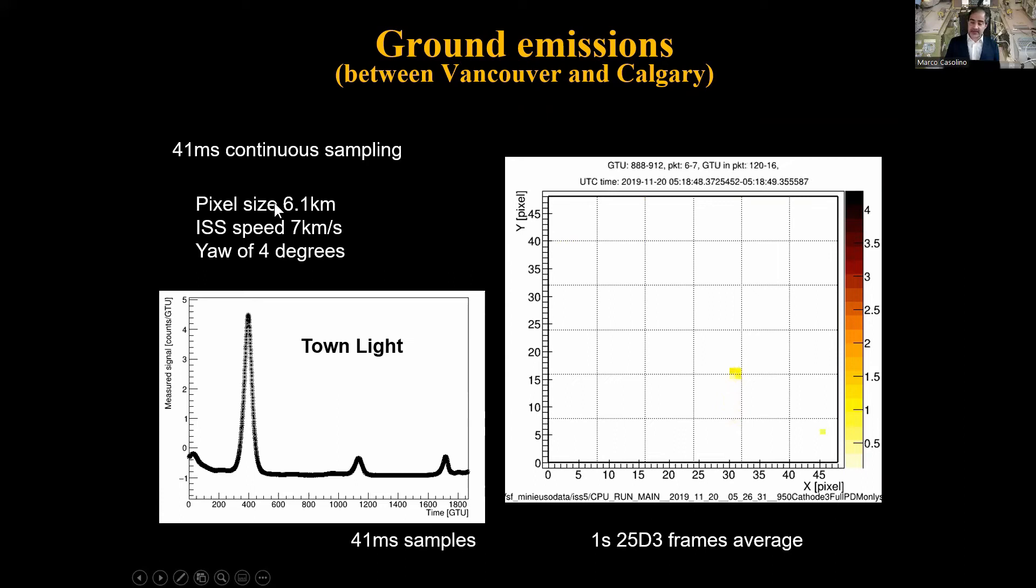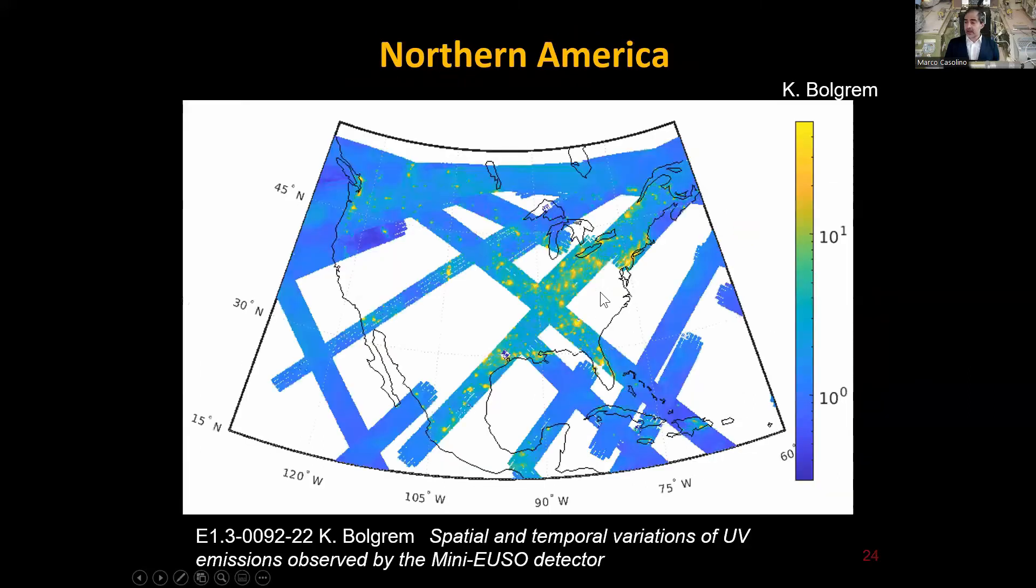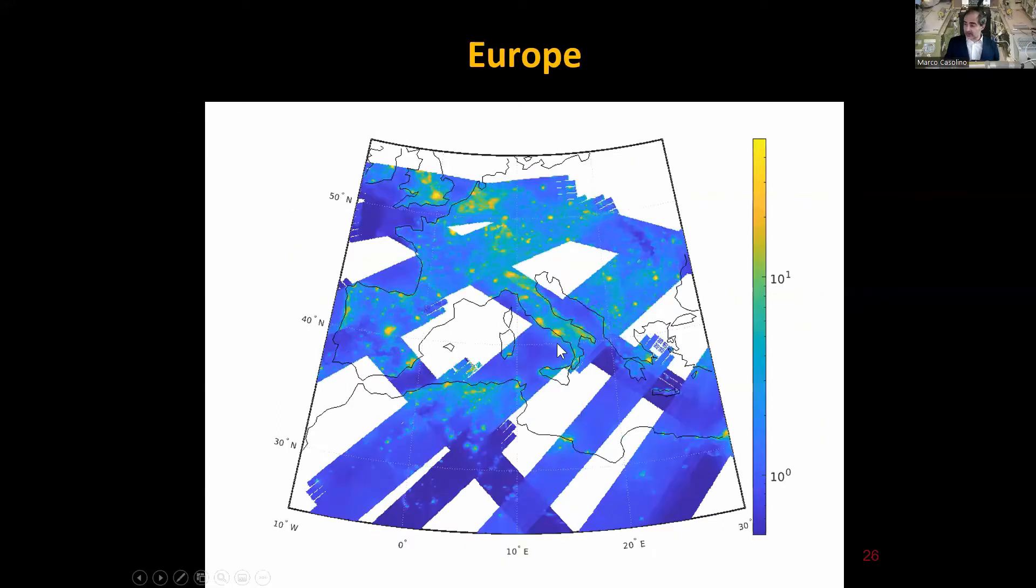If there are no clouds, you can see the town lights as they pass. The speed of the space station is 7 kilometers per second. Since the pixel size is 6 kilometers, we have one pixel movement per second. These are the town lights and we can make maps. This is a map done by Carl Beltram who also has a talk in this session. You can see the passage over North America: Chicago, New York region, Texas, Florida. It's also very stable. When orbits cross, the light is the same and the calibration works correctly. This is Europe: Rome, Napoli, Torino, Milano, London, Paris.